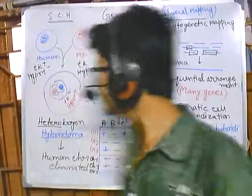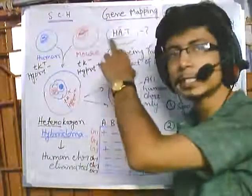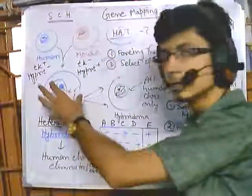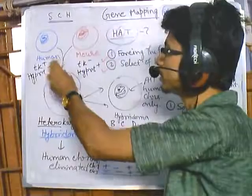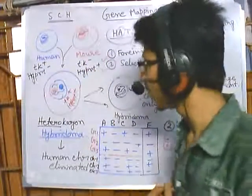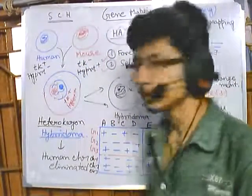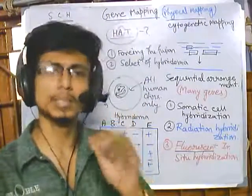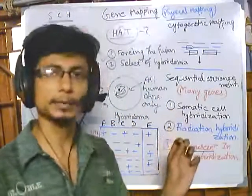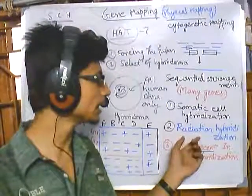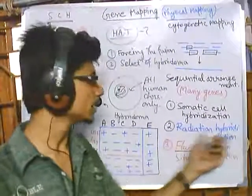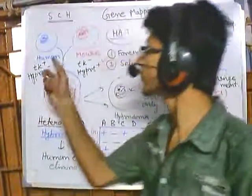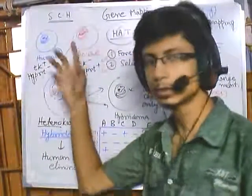We have seen the process of HAT medium selection of hybridomas, which are cells fused from human and mouse somatic cells. Now the second process, called radiation hybridization, is much more similar to somatic cell hybridization. This is also the hybridization of two cell lines like human and mouse somatic cells.